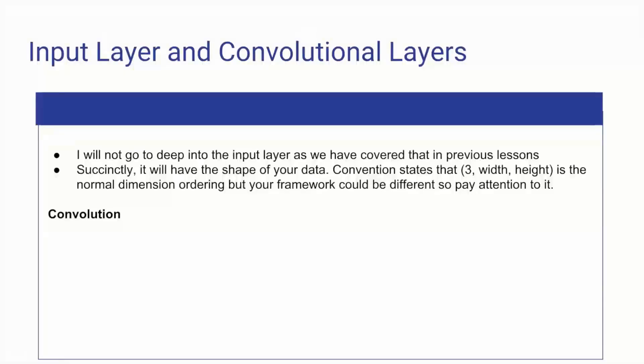So, I'm not going to go too deep into the input layers. We talked about that plenty. It's just going to have the shape of your data. It's going to be normally, conventionally, 3 by the width by the height, and that's the normal dimensional ordering, but different frameworks from Torch to Theano to TensorFlow will, I think, all three of those do it differently. So, you're just going to have to pay attention to the way your framework handles dimensionality.